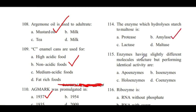Question 115: Enzymes having slightly different molecular structure but performing identical activity are — apoenzymes, isoenzymes, holoenzymes, or coenzymes? Answer is B, isoenzymes.